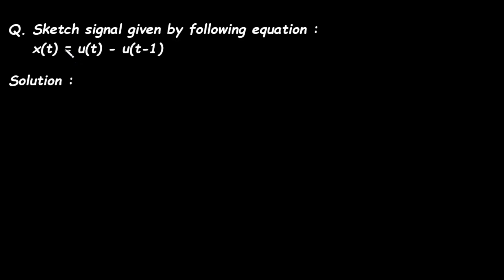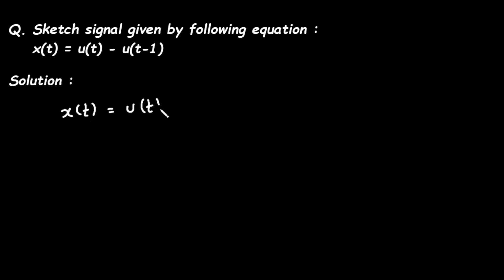In this video, we will see a problem on sketching a signal given by the following equation: x of t is equal to u of t minus u of t minus 1. Here, x of t represents a continuous time signal, u of t is the unit step signal, and u of t minus 1 is the delayed signal.